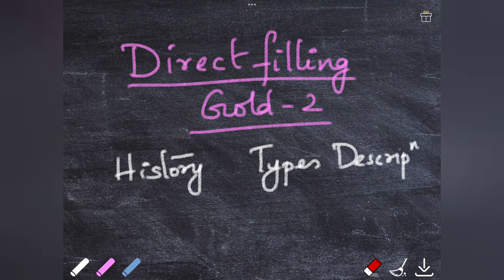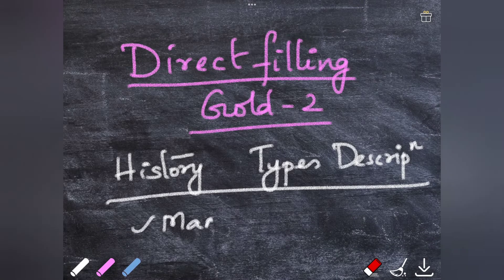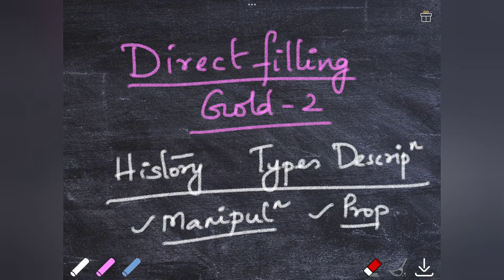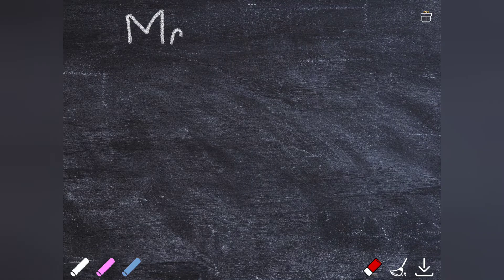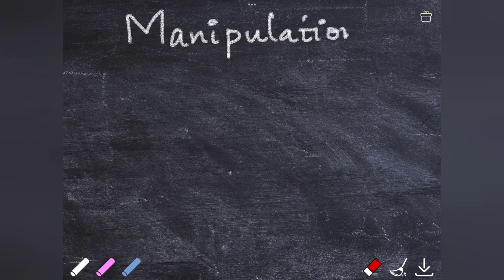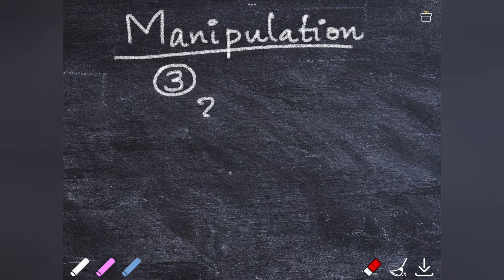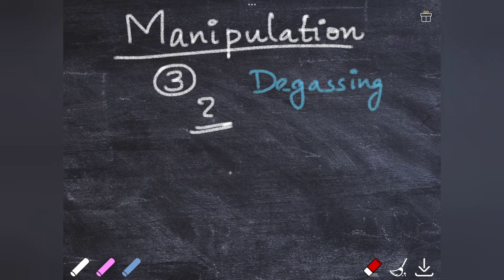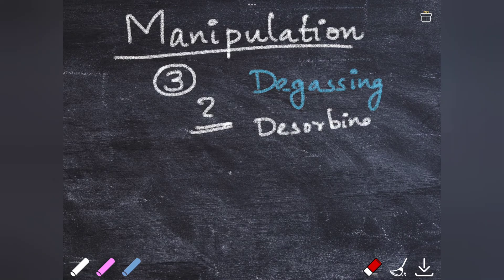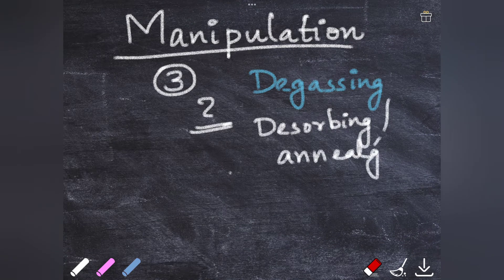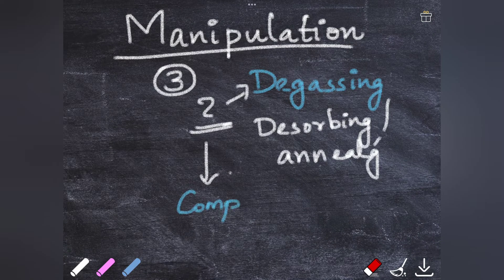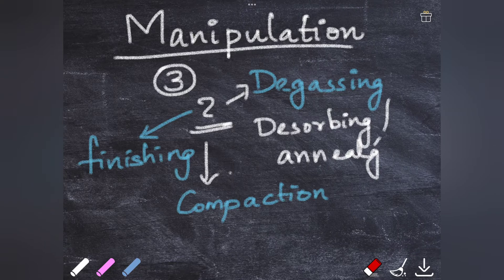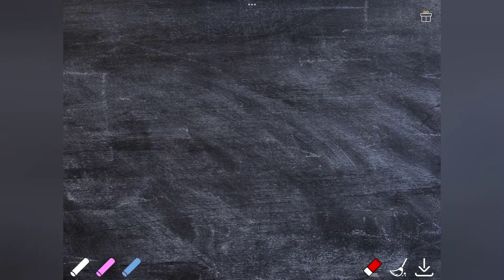In today's video, let's learn about the manipulation as well as the properties and finish the topic. The basic process of manipulation includes three steps. The first one is degassing, also called desorbing or annealing. The second step is compaction, and the final one is finishing of the complete restoration.